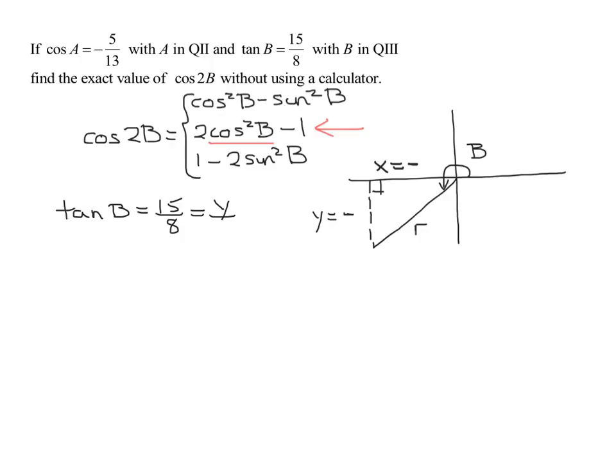So what we're tempted to do at this point is let y equal 15 and x equal 8. But notice we already know both of them need to be negative. So we're going to let y equal negative 15 and x equal negative 8.